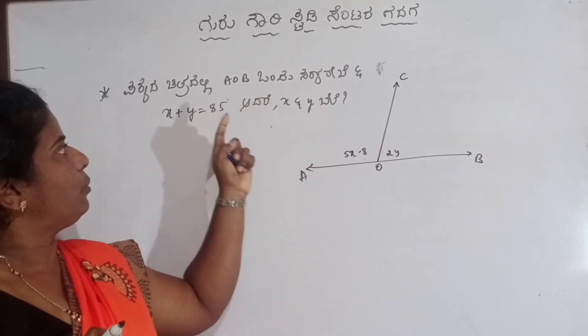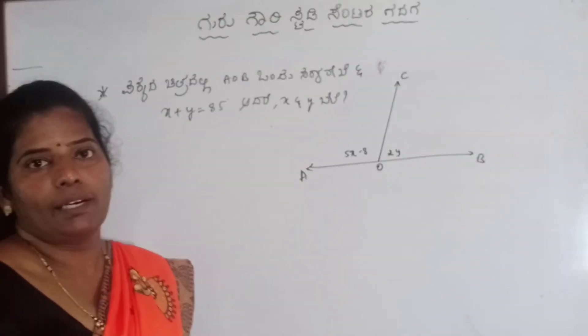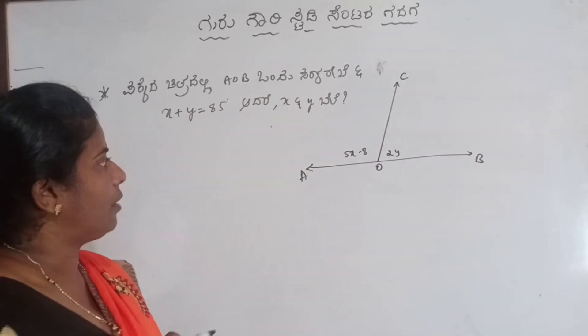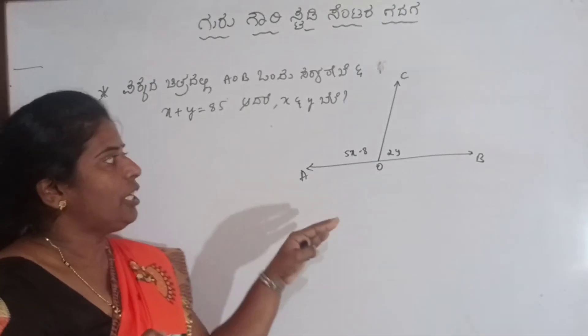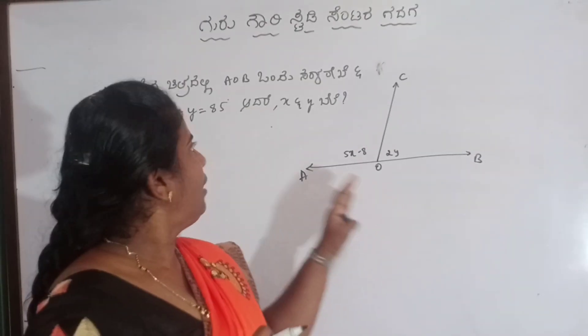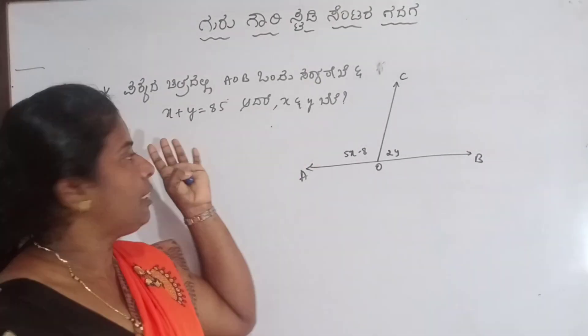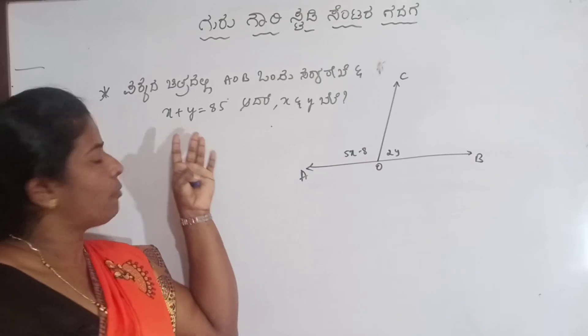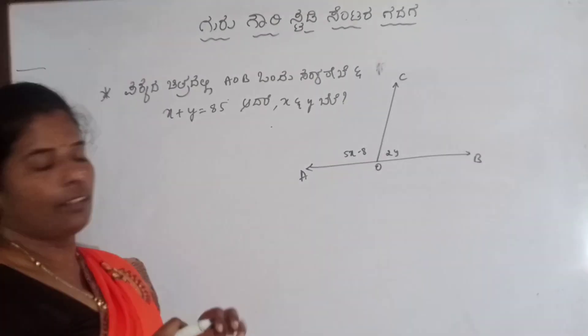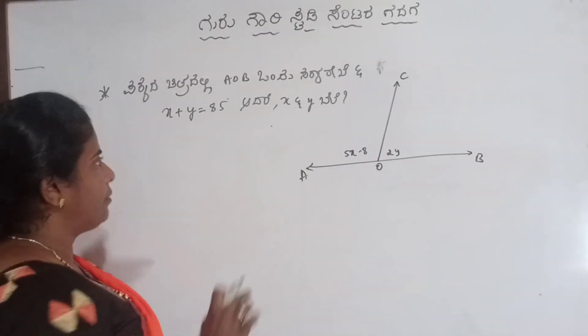x plus y equal to 80 degree. In the adjoining figure, AB is a straight line, and it satisfies the linear pair: x plus y equal to 85 degree. Find the value of x and y.